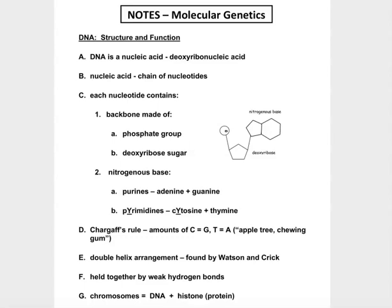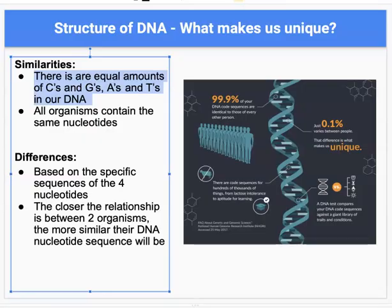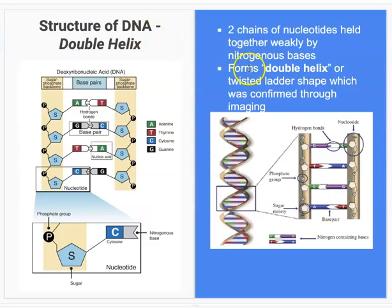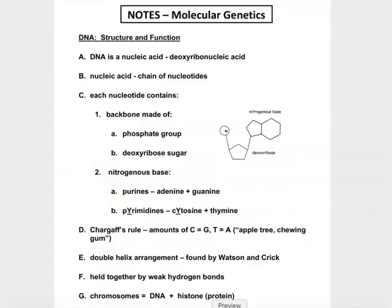Then for letter E, it said blank blank arrangement found by Watson and Crick. So that blank blank arrangement, that was that double helix. So that double helix arrangement here. I left their names off because to me it's more important that you understand what the arrangement is rather than memorizing scientists' names that you could have Google searched quickly. So that should have been the double helix arrangement.